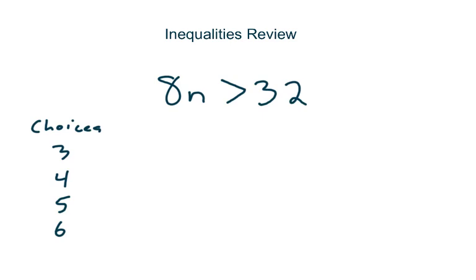The first one would be 8n is greater than 32, and this time they've given us some choices. Choices are 3, 4, 5, and 6. Let's test each one of these to see if they actually work in this inequality.